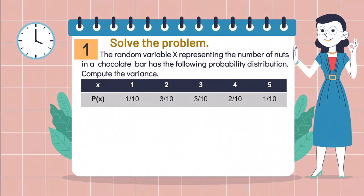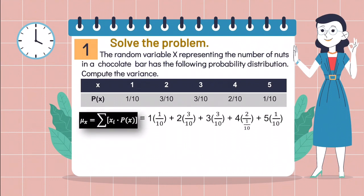By doing so, we are just going to use this formula. Multiply the value of the random variable to their corresponding probability and get their summation, which is 2.9. You can use your scientific calculator to get the correct answer quickly.